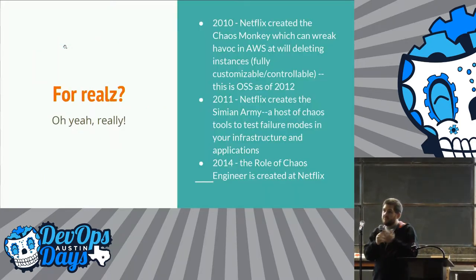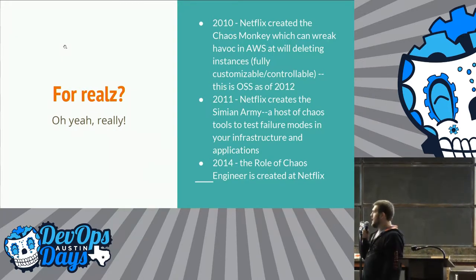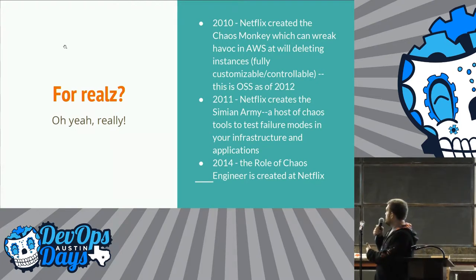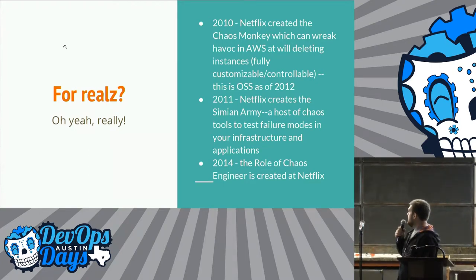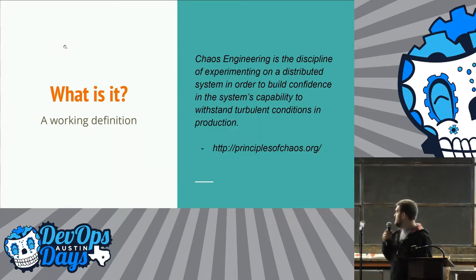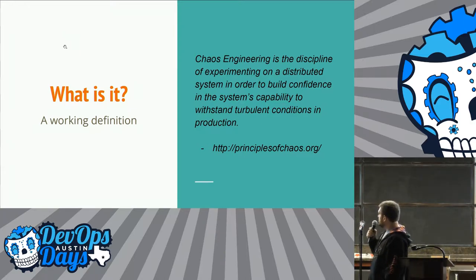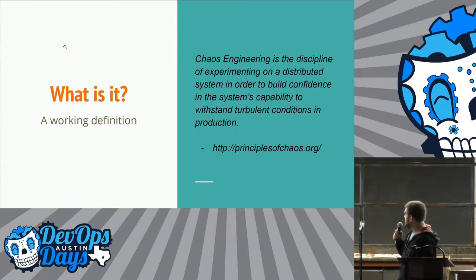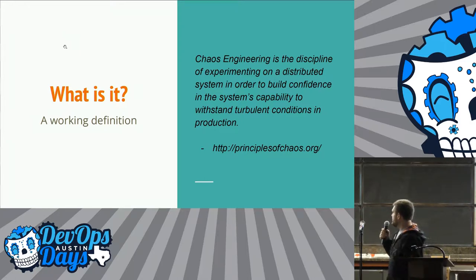I'm Matthew Brahms. I'm a site reliability engineer. So first you may be thinking, for reals, this is a thing, right? We see here in 2010, Netflix created their first chaos thing — we call it the Chaos Monkey. It would go in and terminate instances inside of AWS randomly to help resiliency. Chaos engineering is a discipline of experimenting on a distributed system in order to build confidence in the system's capability to withstand turbulent conditions in production.